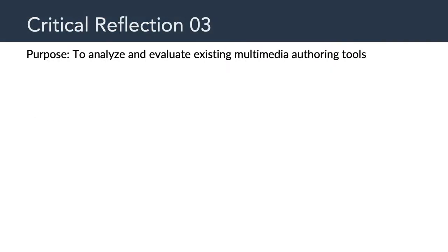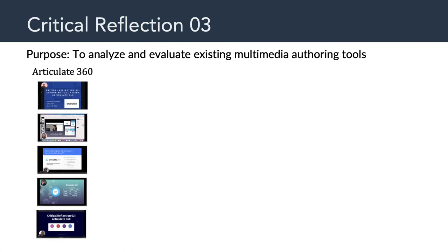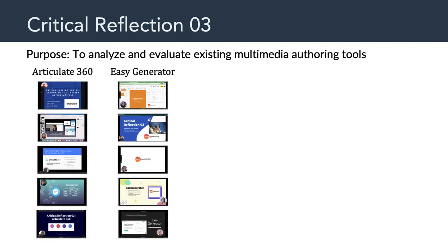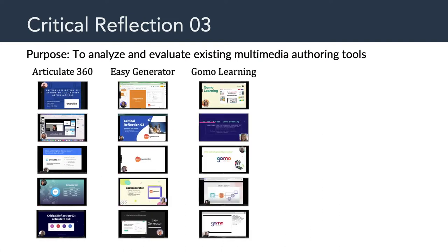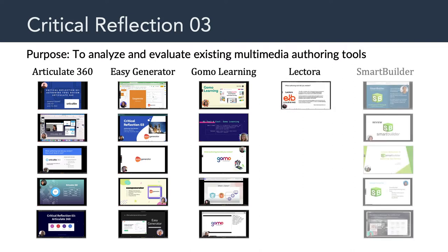Let me begin by saying thank you for your Critical Reflection 3 videos. The purpose of that assignment was to analyze and evaluate existing multimedia authoring tools. We focused on Articulate 360, we examined Easy Generator, we examined GOMO Learning, we examined Lectora, and we took a look at Smart Builder. These are some of the more popular and more powerful programs out there for multimedia authoring.